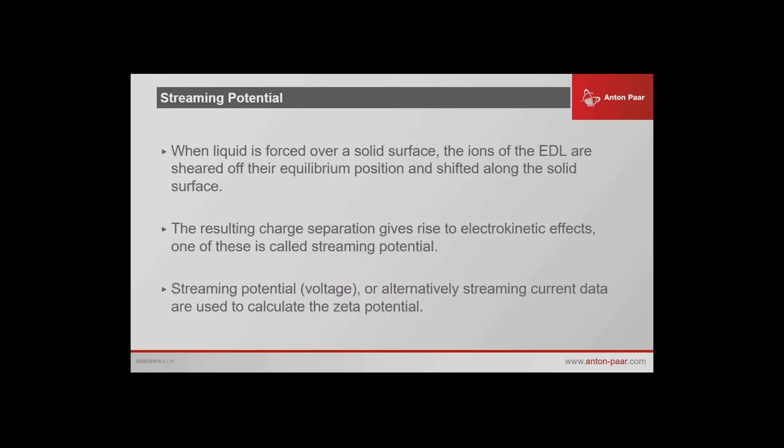How do you measure Zeta potential? You're forcing one layer to slide over the other, and you want to be able to measure those charges. What you get is a streaming potential or a voltage. If you have two electrodes and movement across, depending on how fast it moves or what pressure you apply, you get higher potentials. Depending on the concentration of charge going through, you get more current. You must have charge moving — if it doesn't move, it's more capacitance than current.